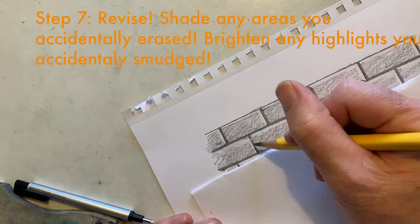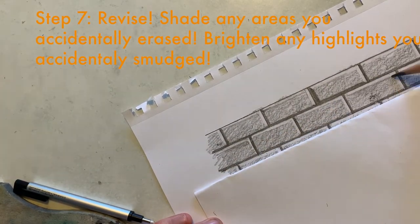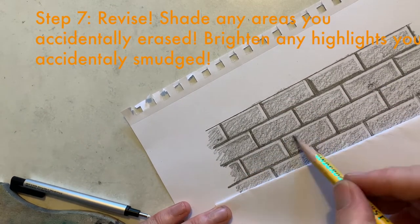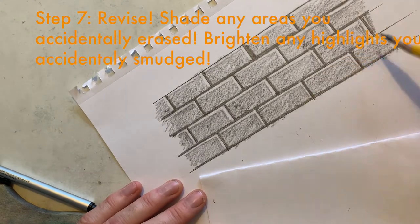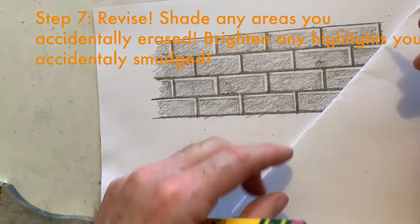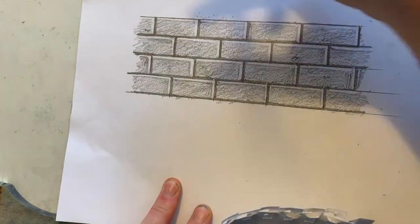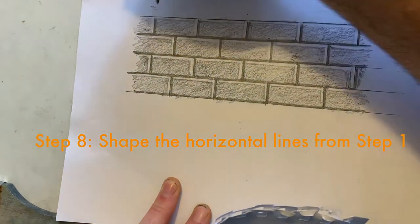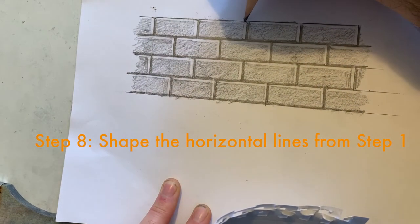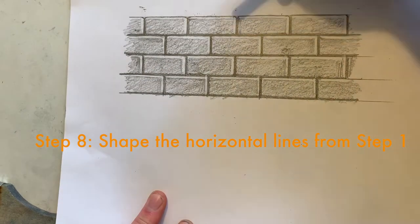Now when you're done, go back in and reshade any areas that should be dark that you accidentally erased. Maybe go back in and touch up with your eraser any areas that should be highlights that you might have accidentally smudged. It can also look nice if you reshape the corners of the bricks up top like this. So instead of a smooth straight line, you actually can see that texture along the top of the wall.